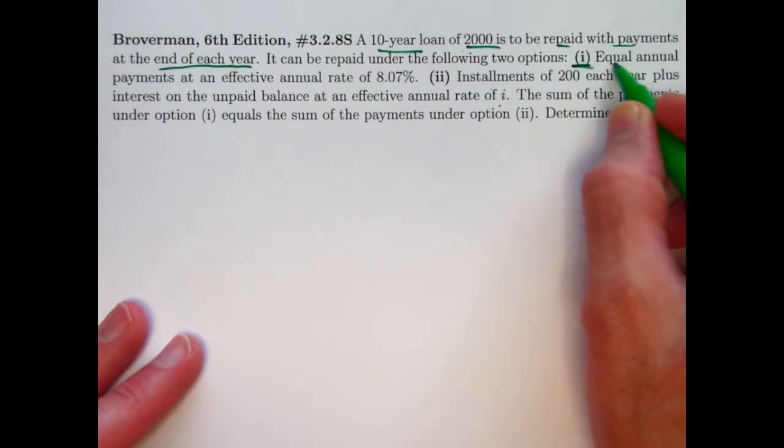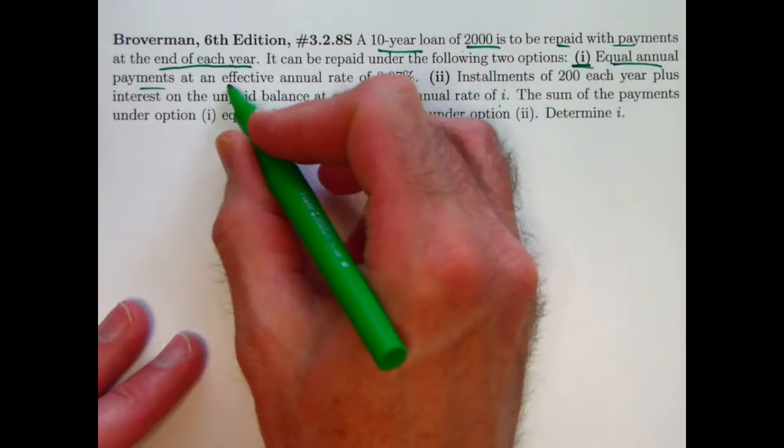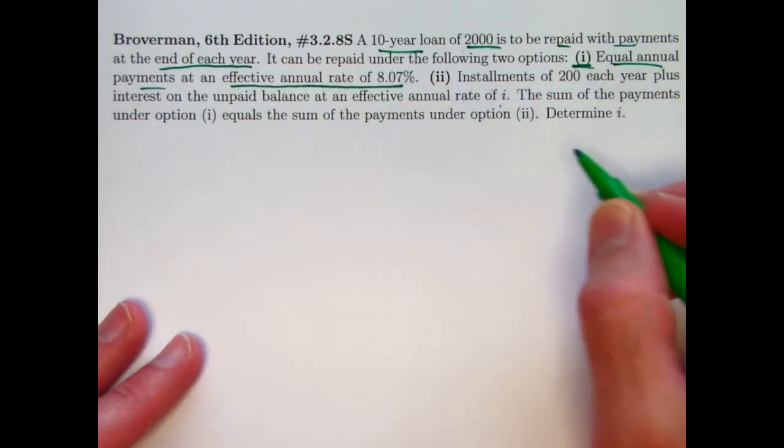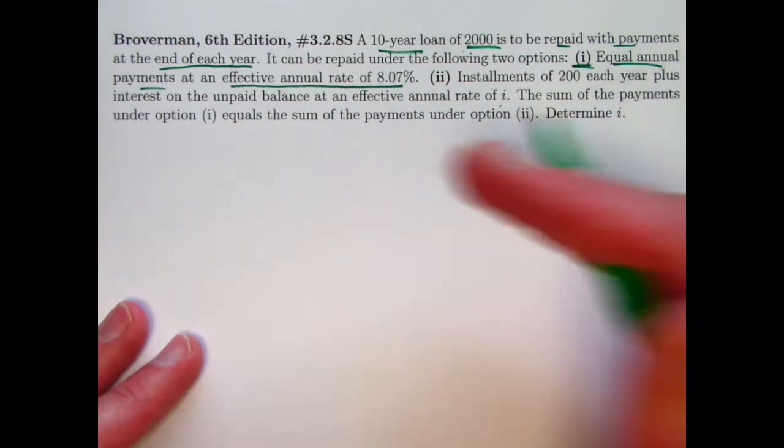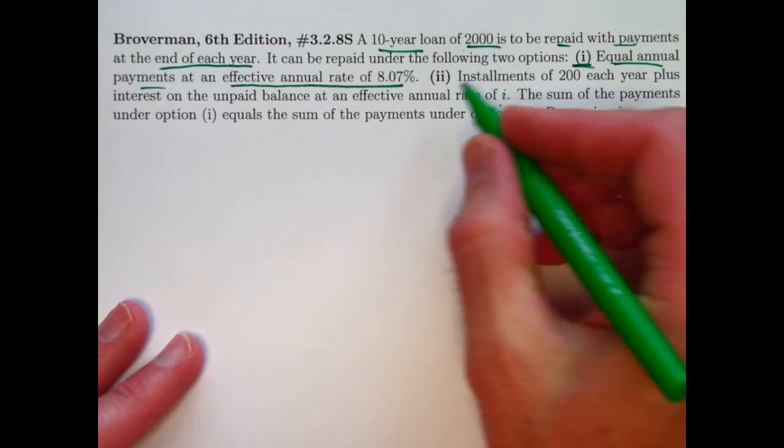Option one: equal annual payments at an effective annual interest rate of 8.07 percent. So that's the usual kind of way that people pay back loans. It's going to result in level payments.